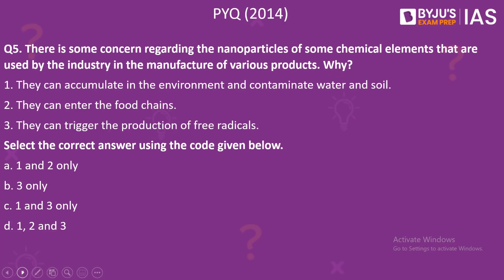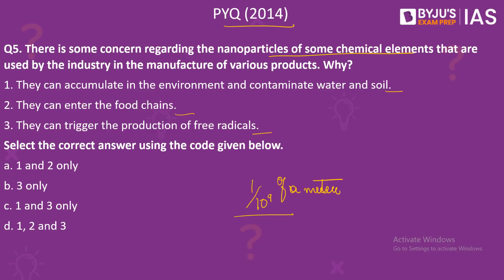Now let us take up a previous year question from Prelims Paper 2014: There is some concern regarding nanoparticles of some chemical elements used by industry. Why? Number 1: They can accumulate in the environment and contaminate water and soil. Number 2: They can enter the food chains. Number 3: They can trigger the production of free radicals. Nanoparticles are particles with dimensions comparable to 1×10⁻⁹ of a meter. They can be released through natural processes such as forest fires, volcanic eruptions, and dust storms. However, nanoparticles of chemical elements are a concern because they accumulate in environmental matrices — air, water, soil, sediments, and wastewater sludge. So Number 1 is correct.